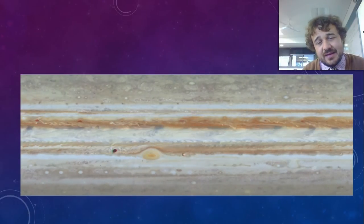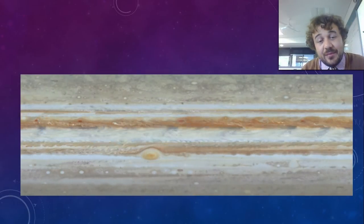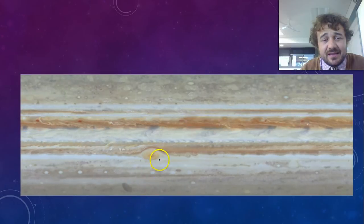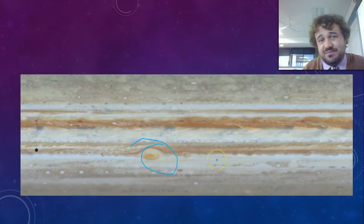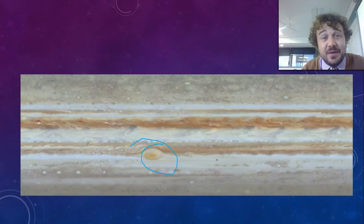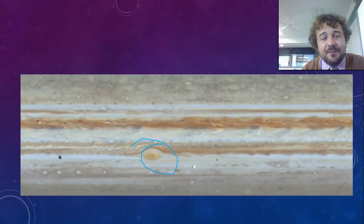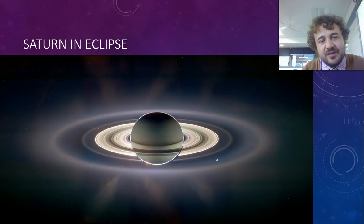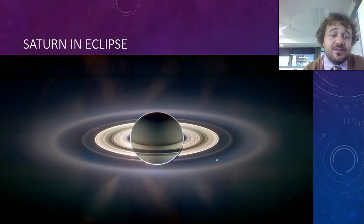These are two of my favourite pictures. This is actual footage of the red eye — that storm we were talking about that's about 400 years old. It disappeared for about six months and then it came back. And then the next one — that is Saturn eclipsing the Sun. There's a satellite right behind Saturn, and that's the point where it got completely in the way of the Sun, the angles worked out, and it completely eclipsed the Sun. Super rad.